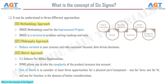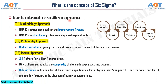What is the concept of Six Sigma? It can be understood in three different approaches. Number one, methodology approach: DMAIC methodology is used for the improvement project. DMAIC is a structured problem-solving roadmap and tools. Number two, philosophy approach: reduce variation in your process and take customer-focused, data-driven decisions. Number three, metric approach: 3.4 defects per million opportunities. DPMO allows you to take the complexity of the product or process into account. The rule of thumb is to consider at least three opportunities for a physical part or component — one for form, one for fit, and one for function — in the absence of better considerations.